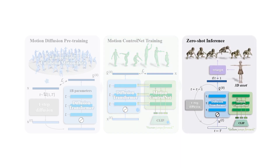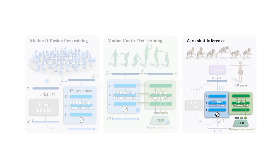During inference, the pre-trained unconditional denoiser and the fine-tuned conditional denoiser are combined with classifier-free guidance, generating realistic motions with zero-shot text inputs.